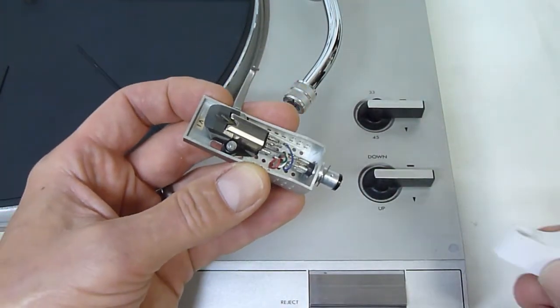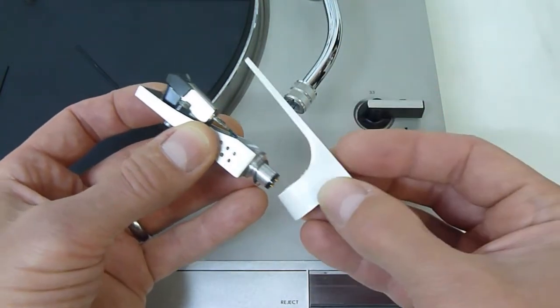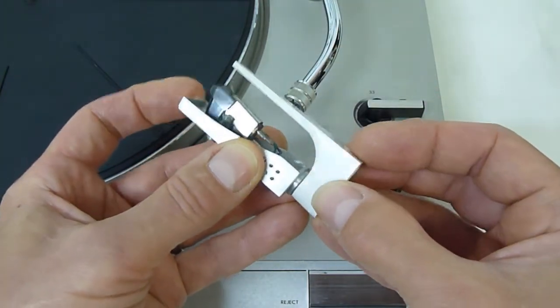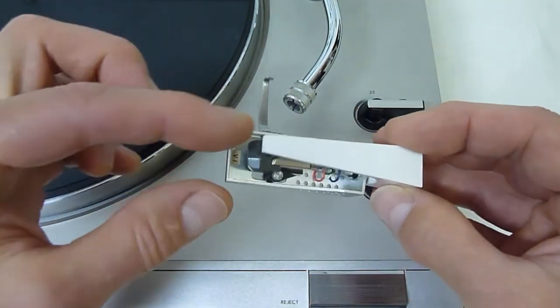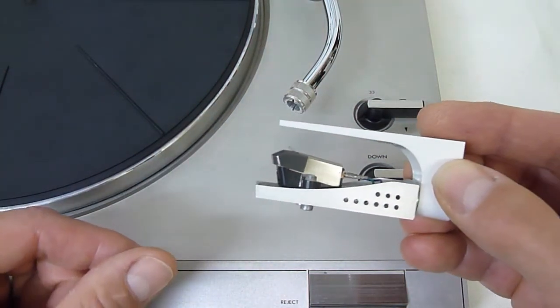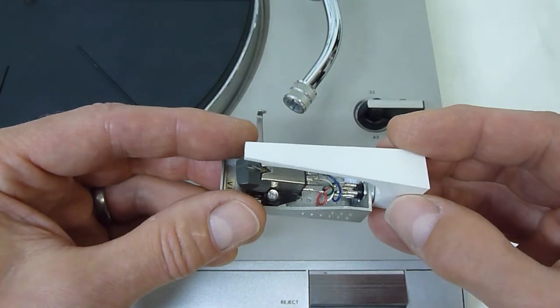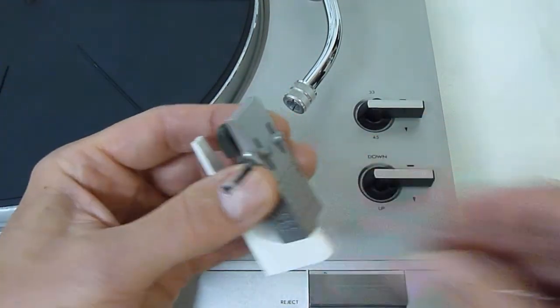The ideal way to check for the cartridge alignment is with a gauge like this. Just plug the head shell into it and now the stylus tip should line up with the end of the gauge. This one doesn't, it needs to be adjusted in position. So I'm going to do that now.